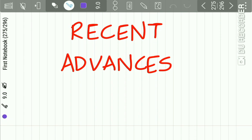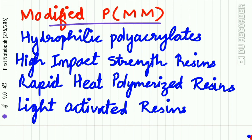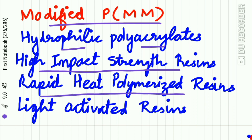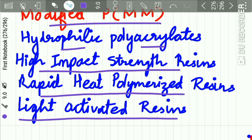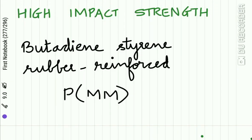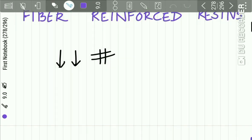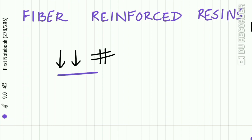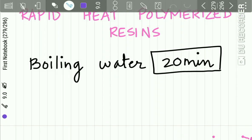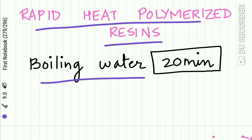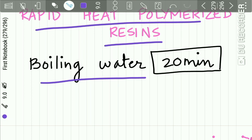Recent advances in denture base resins include modified polymethyl methacrylate such as polyhydrophilic polyacrylates, high impact strength resins, rapid heat-polymerized resins, and light-activated resins. In high impact strength denture resins, butadiene-styrene rubber-reinforced polymethyl methacrylate is used. In fiber-reinforced resins, there are decreased chances of fracture. In rapid heat-polymerized resin, the resin is polymerized under boiling water for 20 minutes. All these advances aim to increase the physical properties of the resins.